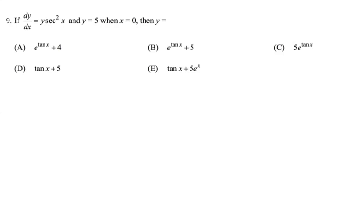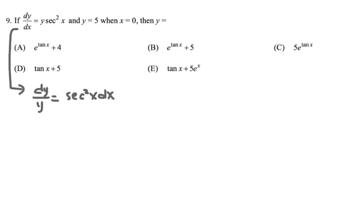Let us look at number 9. Here we have dy over dx is equal to y secant squared of x. What we can do is separate the variables. We get dy over y equals, by cross multiplication, secant squared x dx. Then we can integrate both sides. We get ln of absolute value of y equal to the antiderivative of secant squared, which is tangent x plus c.